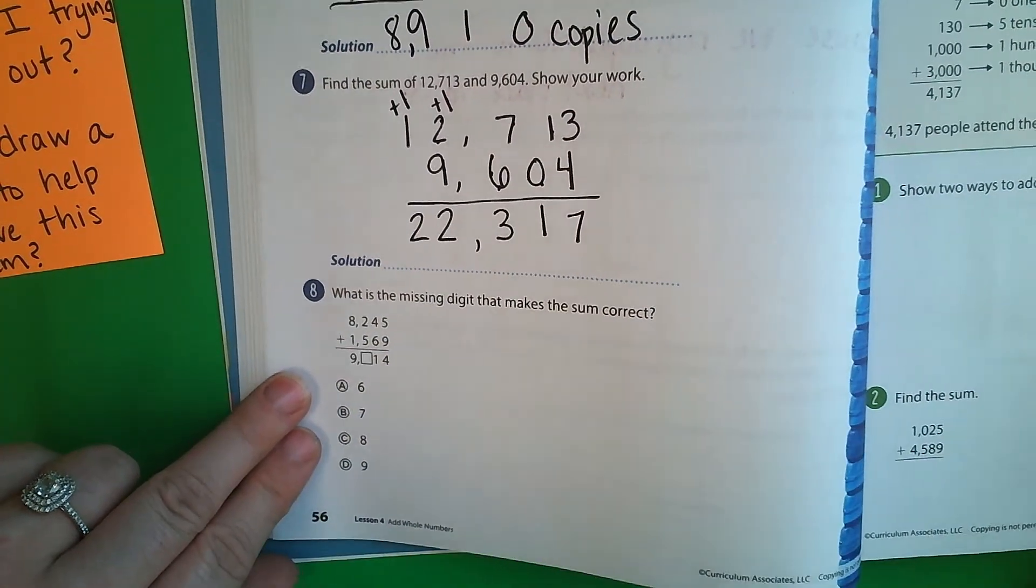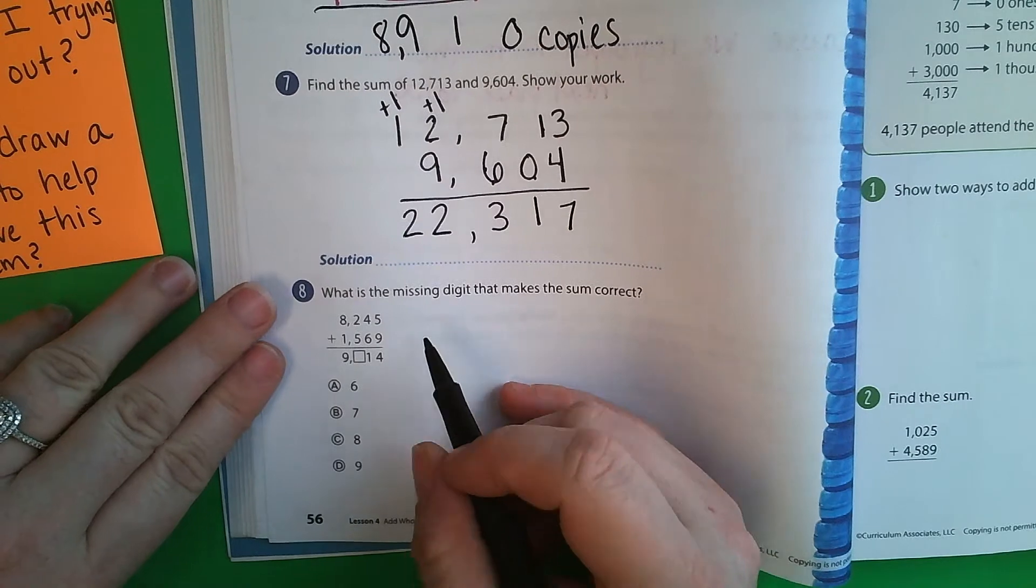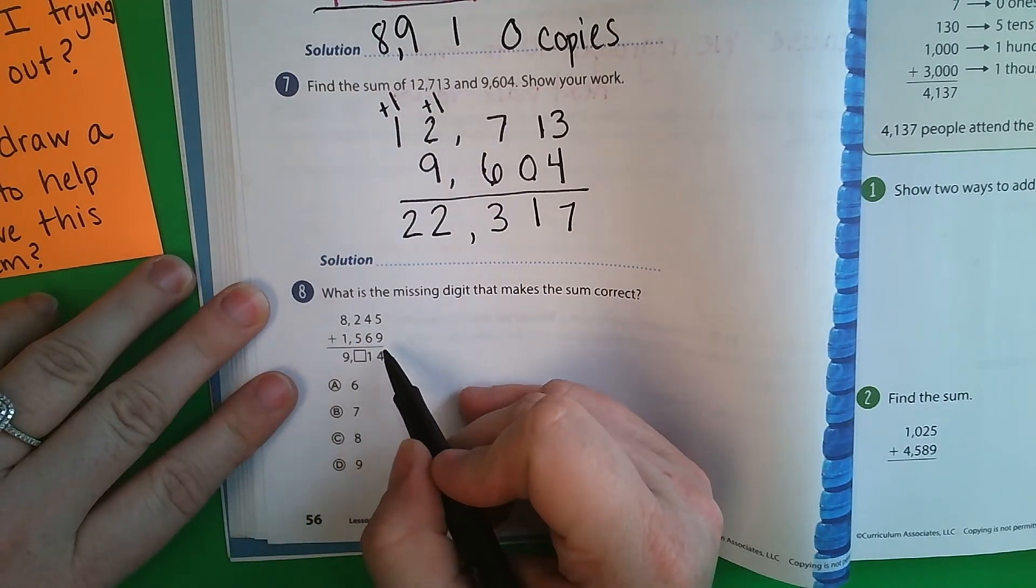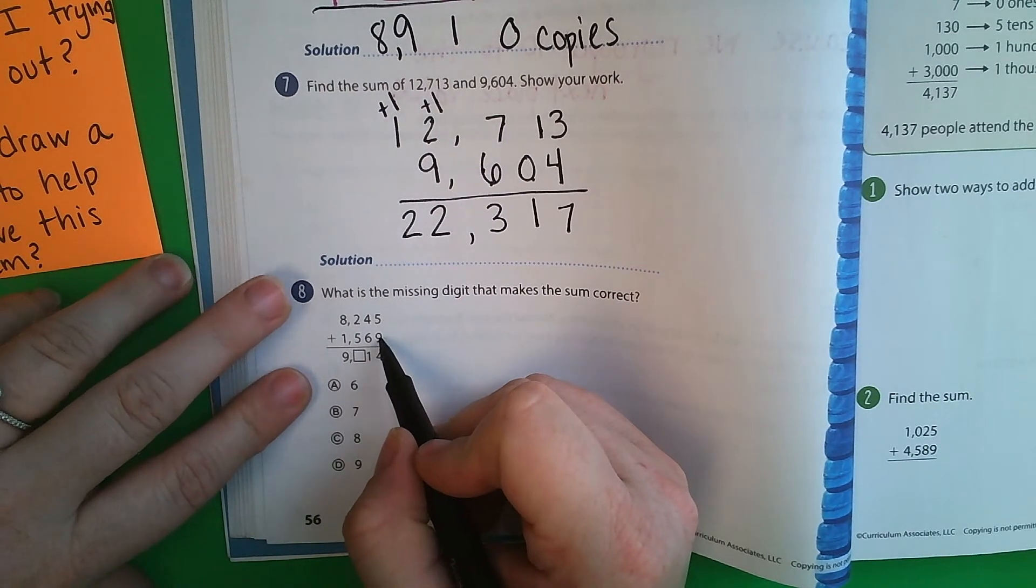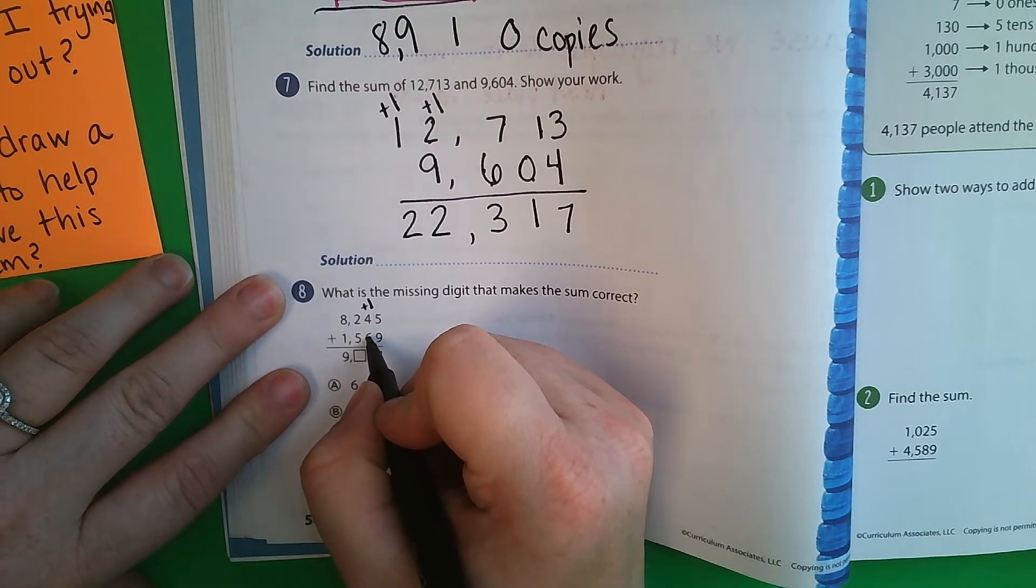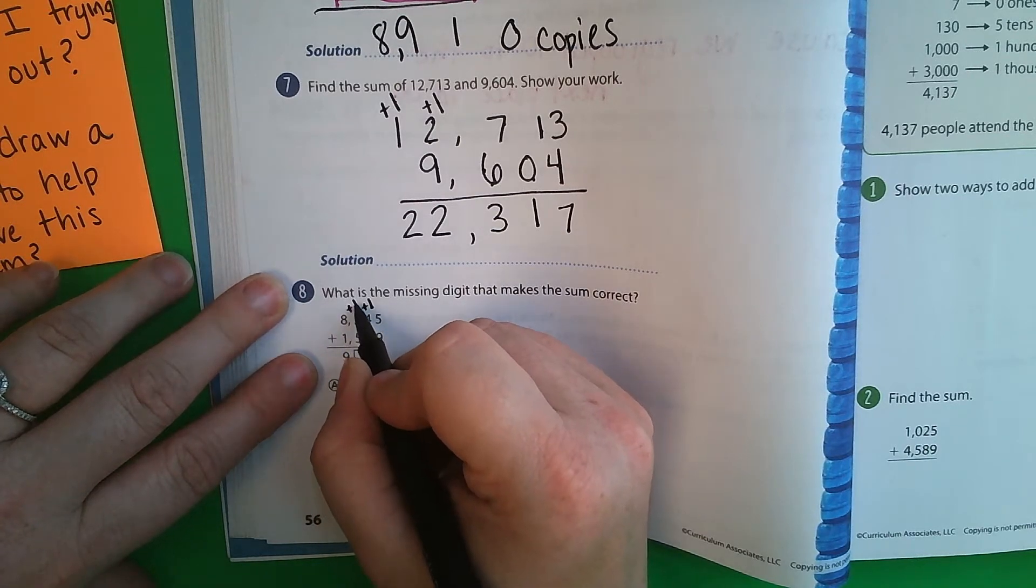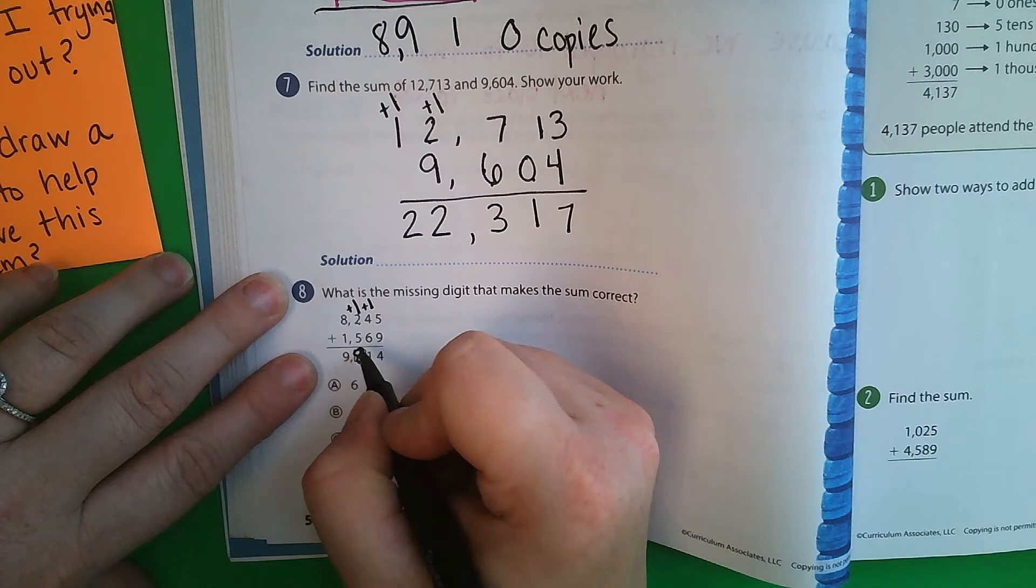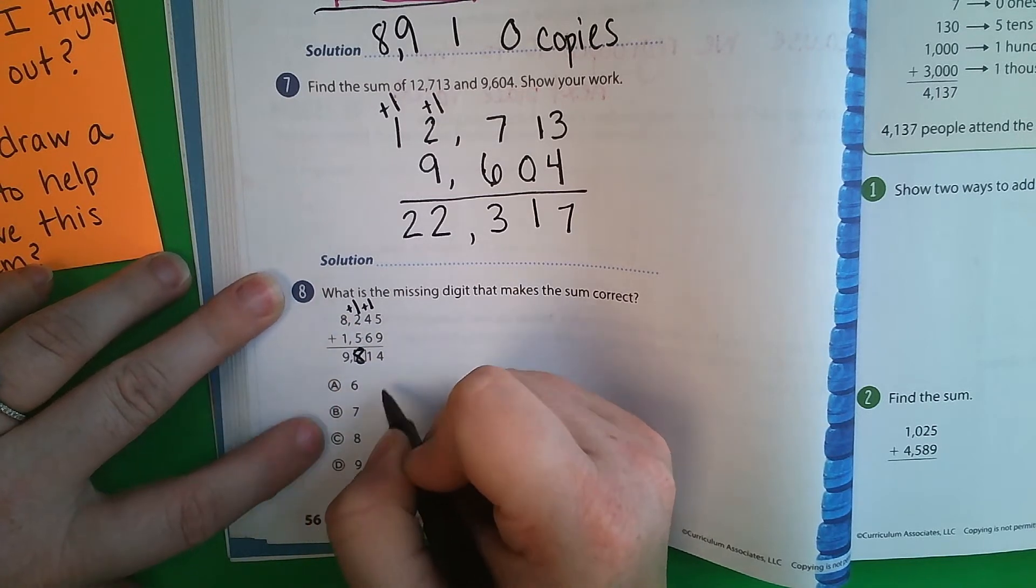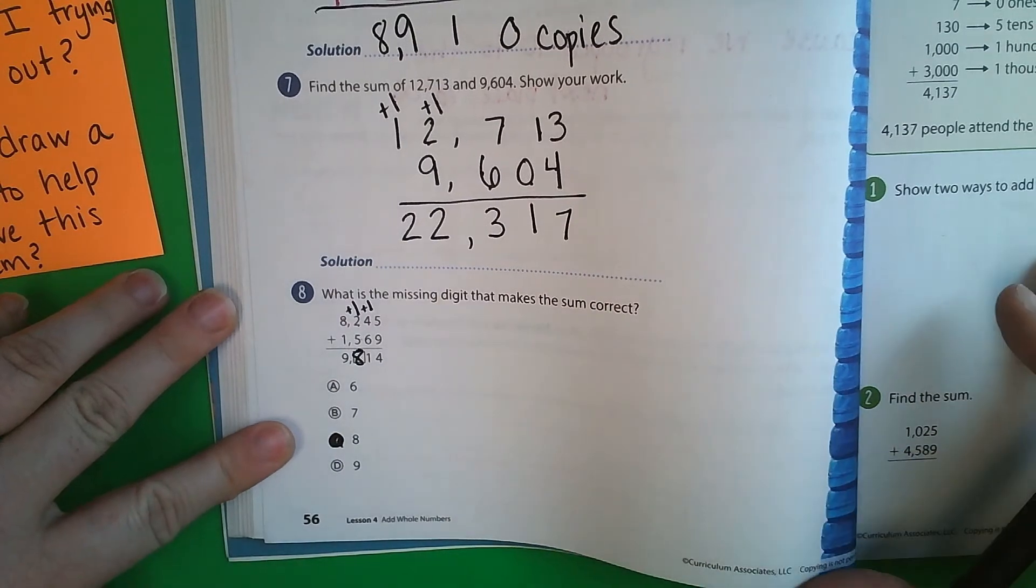Now we're going to come down here. What is the missing digit that makes the sum correct? Any time you have a problem like this, you should always just go ahead and solve it. 9 plus 5 is 14. 6, 7, 8, 9, 10, 11. So there should be a 1 up here. 5, 6, 7, 8. 8 plus 1 is 9. So my missing number is 8. It's C.